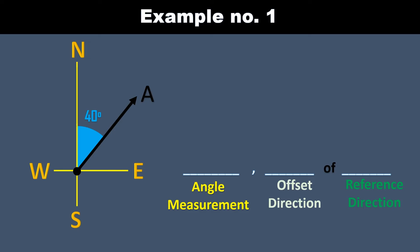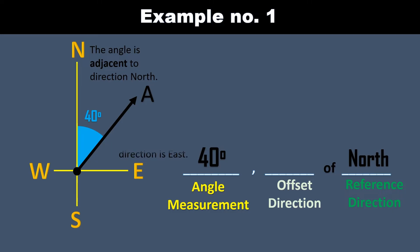Let us analyze this example. The given angle is 40 degrees. The 40-degree angle is adjacent to the north direction, so we place the word north on the third blank for the reference direction. The angle is turning towards east, so we place east on the second blank. So the angle is read as 40 degrees east of north.